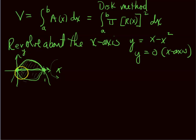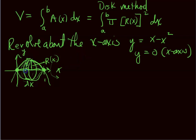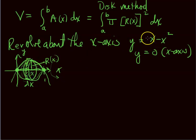We draw a representative piece — a thick circle, which is our disk. The radius is the y-value at that x, given by r(x) = x − x². We're going from 0 to 1, so those are our limits of integration. We write π ∫ from 0 to 1 of y² dx, where we replace y with x − x².